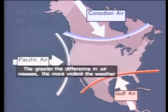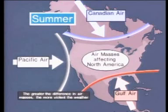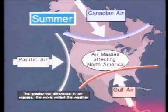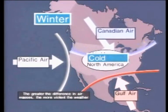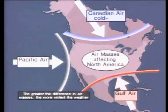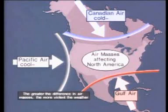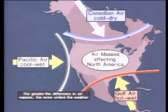Let's review. There are three major air masses affecting North America. During the summer, Gulf air moves forward, creating a warm front. During winter, Canadian air moves forward, creating a cold front. Canadian air has the coldest air; Pacific air mass is next coldest; Gulf air is the hottest. Canadian air is the driest. Both Pacific air and Gulf air are wet, but Gulf air is usually the wettest.